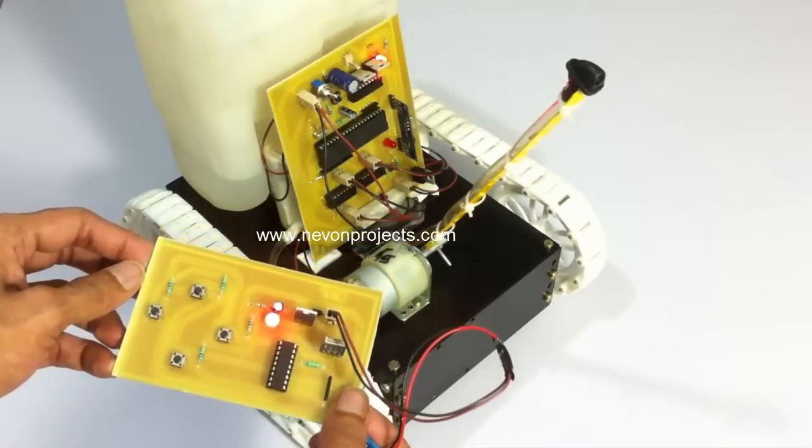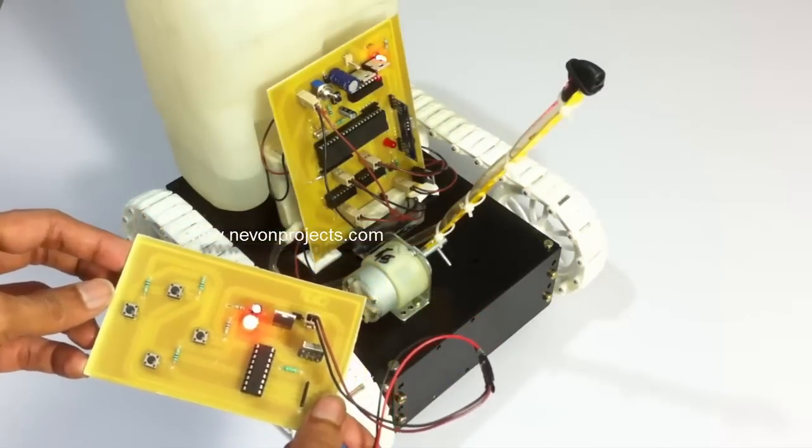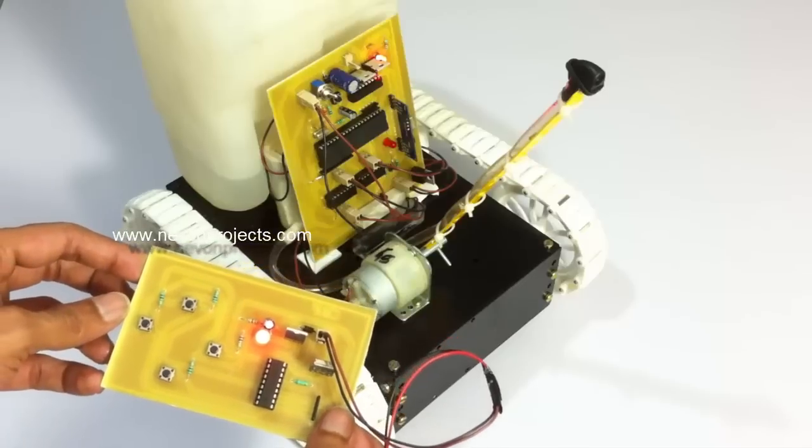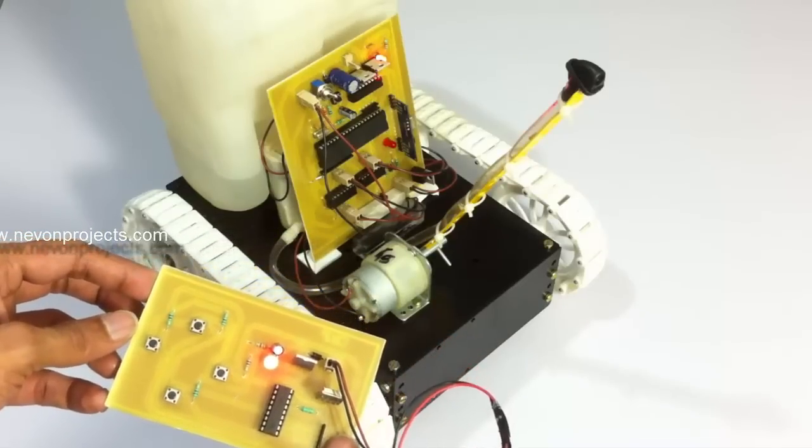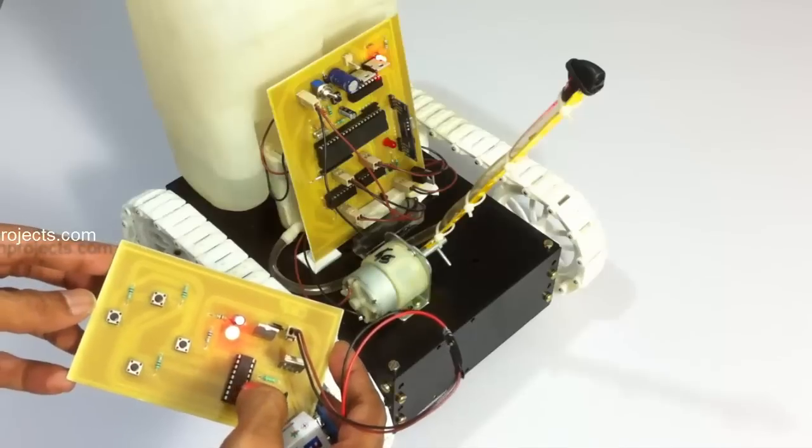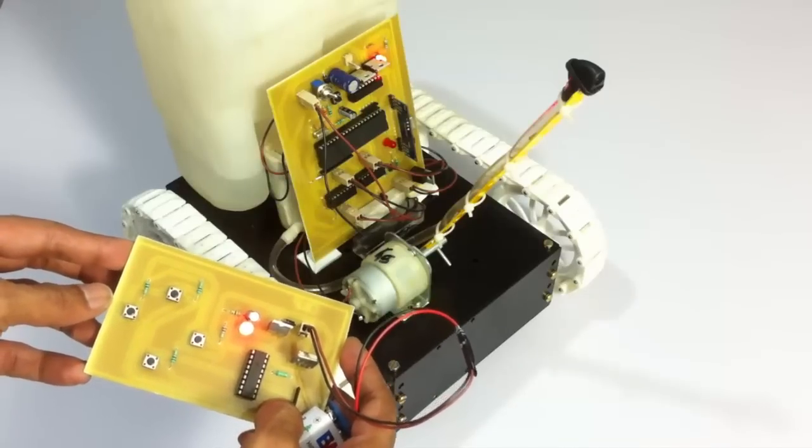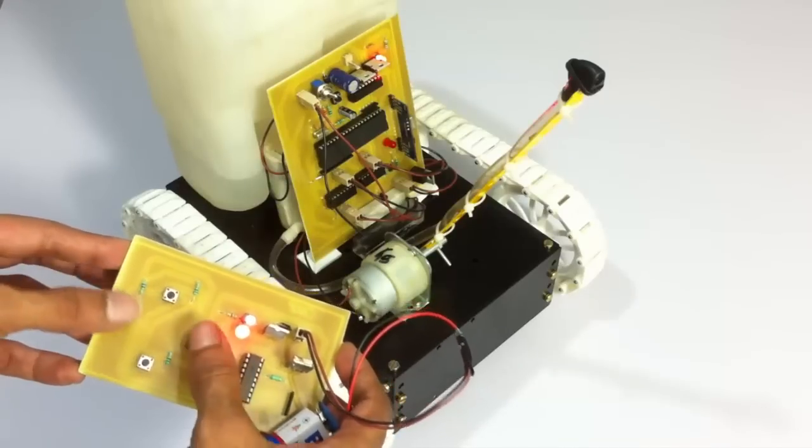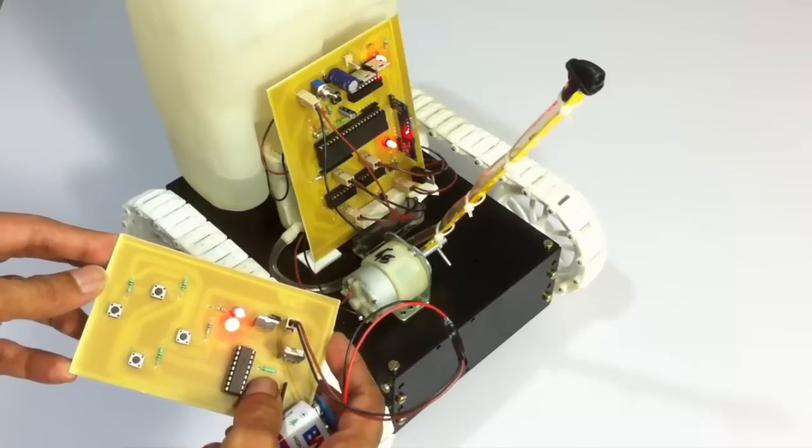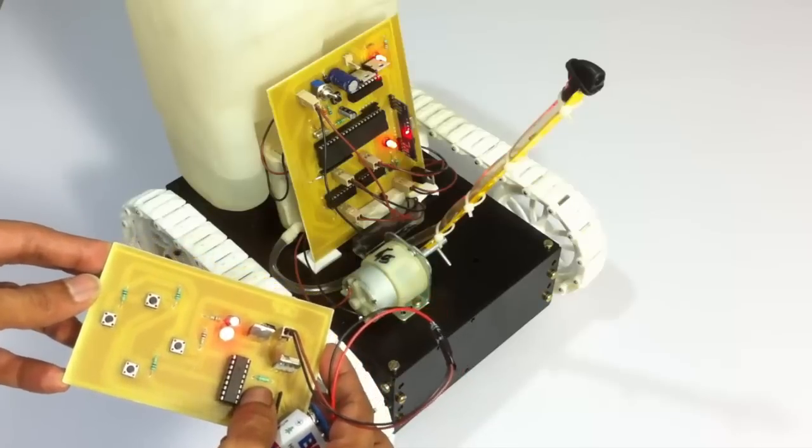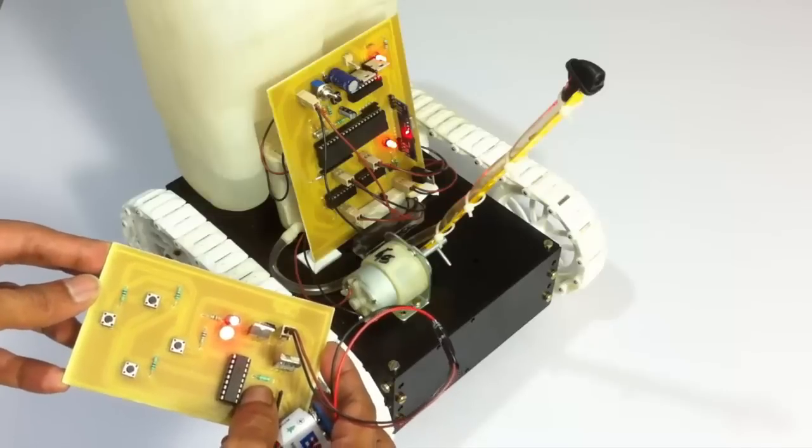This is how we can operate the robotic vehicle. Now, in order to operate the spray arm, we can go into spray mode. To enter spray mode, we need to long press both left and right buttons together. As you can see, an LED just went on on the circuit.